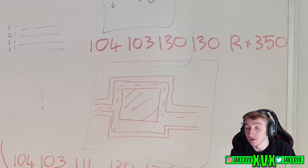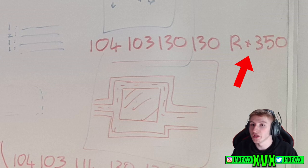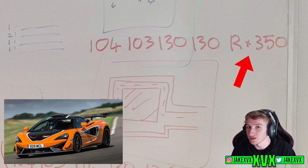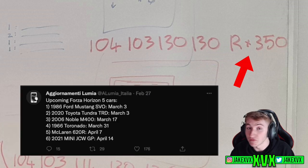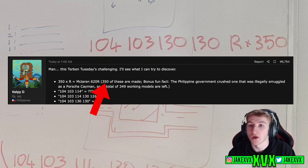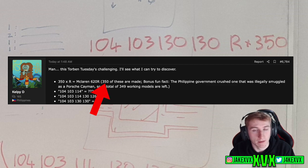Now a few people have actually seemed to have figured this out. Ignoring the first four numbers and just focusing on the R times 350. We all know that the McLaren 620R is a vehicle that has been leaked very recently to be in the next update.